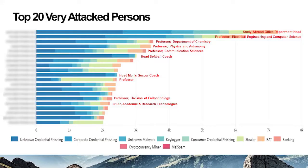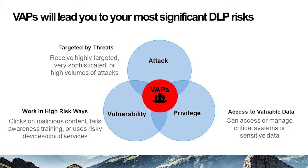If we drill into that further, we have a concept of very attacked persons, or VAPs. This is an anonymized breakdown of the top 20 in a higher-ed organization, and what's very interesting is that very attacked persons are not necessarily mapped to the same set of very important persons. There are a variety of reasons why any given individual may be more attacked than others. It's important to understand that mapping so you can protect yourself suitably, because your VAPs will tend to lead you to your most significant data loss risks.